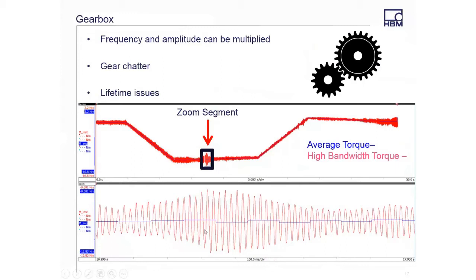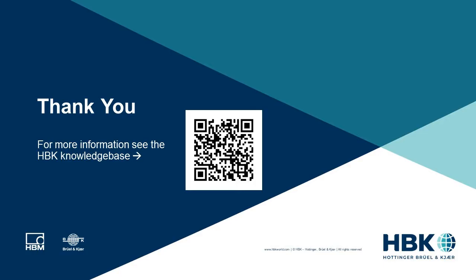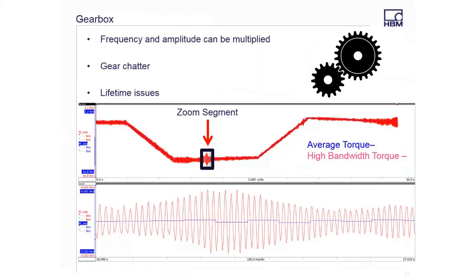This could be a big problem because gearboxes are going to multiply or divide your frequency or your torque. Because of things like gear chatter, we really want to know where those particularly noisy points are. If we could have a torque sensor at the input to the gearbox, we can understand: is the gearbox causing this, or is the motor causing this? How do we troubleshoot these issues, especially if there are lifetime situations? If we were just to look at the filtered value, we would get no information and have a very hard time determining what our problems were. There is a lot of value in having the amplitude and frequency information available.